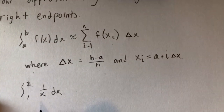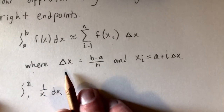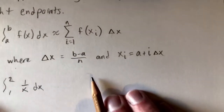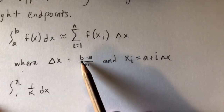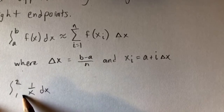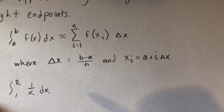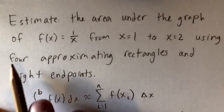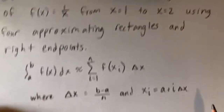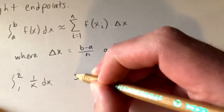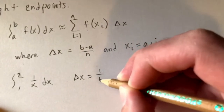So what we need to figure out is what our delta x and x sub i are going to be. Delta x is just b minus a over n, which is 2 minus 1 — that's 1 — over n, the number of rectangles. They told us in the problem we're using 4 approximating rectangles, so n equals 4 and delta x equals 1 over 4.